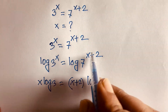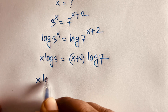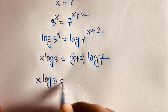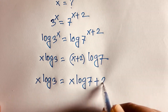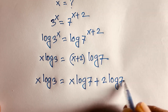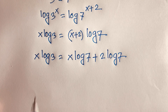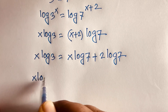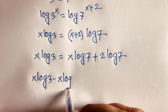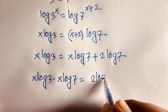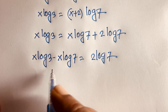So x log 3 is equal to x times log 7 plus 2 times log 7. I just multiply out. Then I can say x log 3 minus x log 7 is equal to 2 log 7.